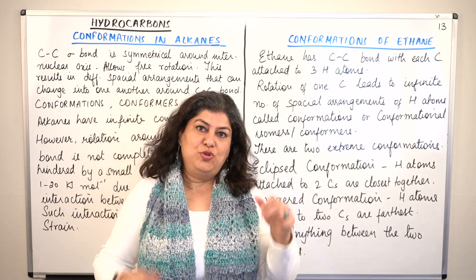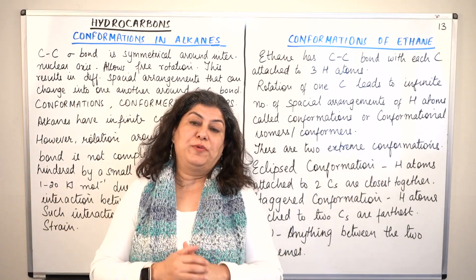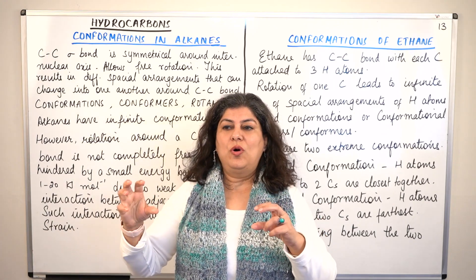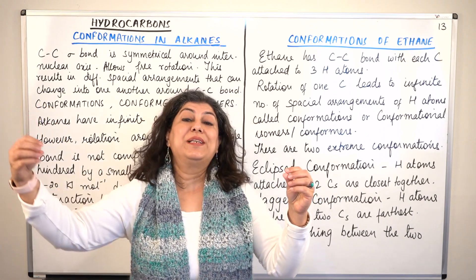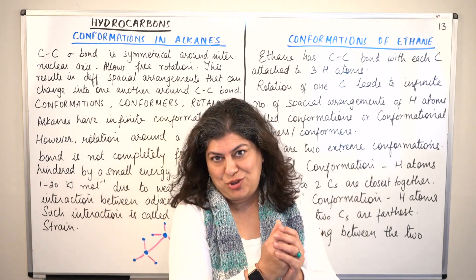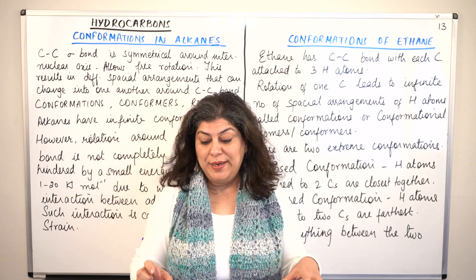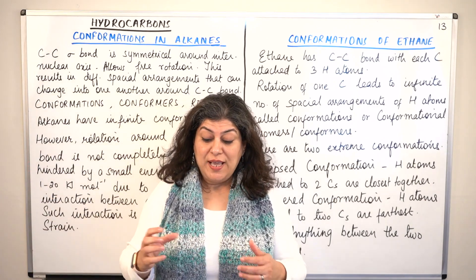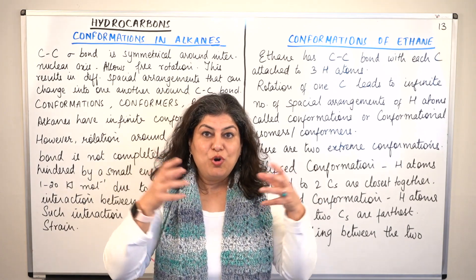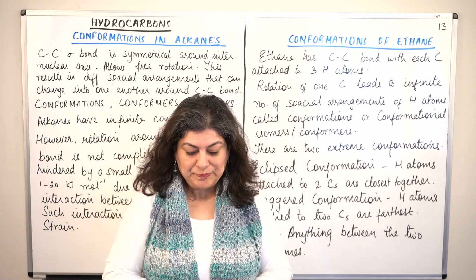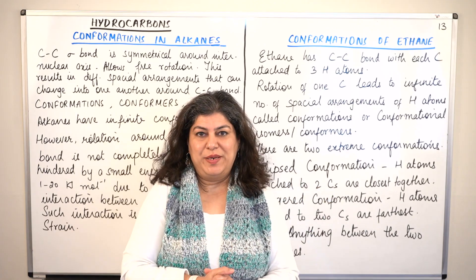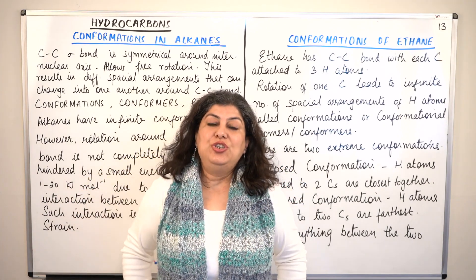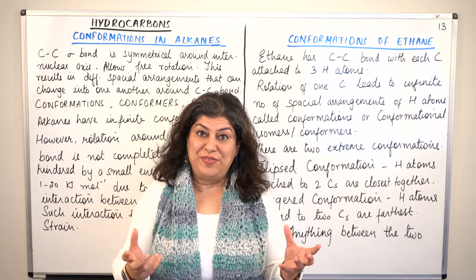Stereoisomers are further categorized into two types: geometrical isomers and optical isomers. Optical isomerism is studied in grade 12, where isomers of a compound behave differently when a monochromatic beam of light is passed through them — I have covered this in separate videos if you are curious. Geometrical isomers also have the same bonds; only the orientation is different, due to which properties differ — their stability is different.